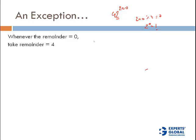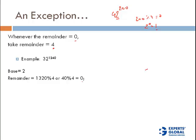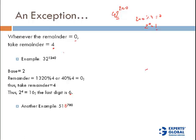Since this is a tryout video I won't go into why — that's covered in detailed videos later. For now: whenever you get remainder 0, take the remainder as 4. For example, 32 raised to the power 1240 — the base digit is 2, remainder of 1240 divided by 4 is 0, so we take remainder as 4. Another example: 518 raised to the power 780 — the last two digits of the power give remainder 0, so we take it as 4.